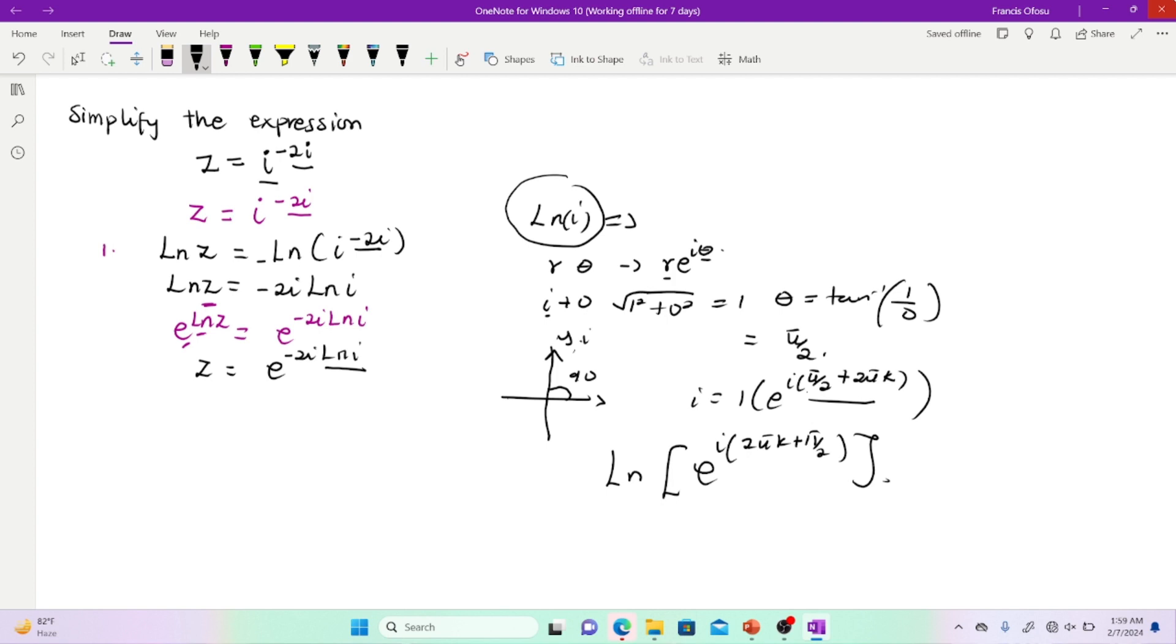Then, as usual, this side will come to this side. Because when you take logarithm of a number which is being raised to another number, it simply brings the power down. So I'll have i open brackets 2πk plus π on 2 multiplying ln e. Then, ln e is simply equal to 1. Therefore,